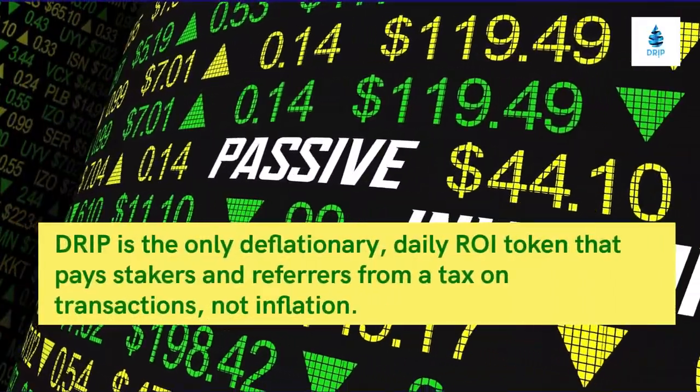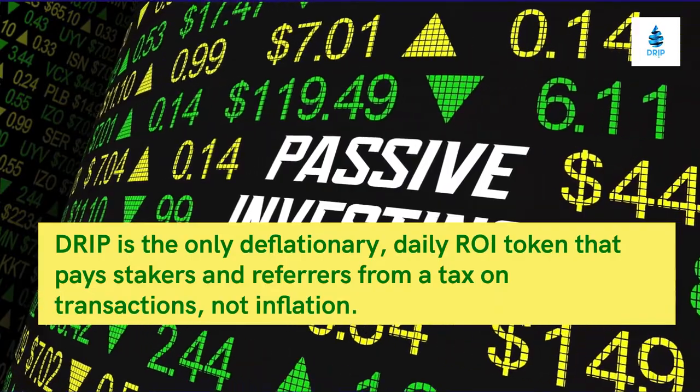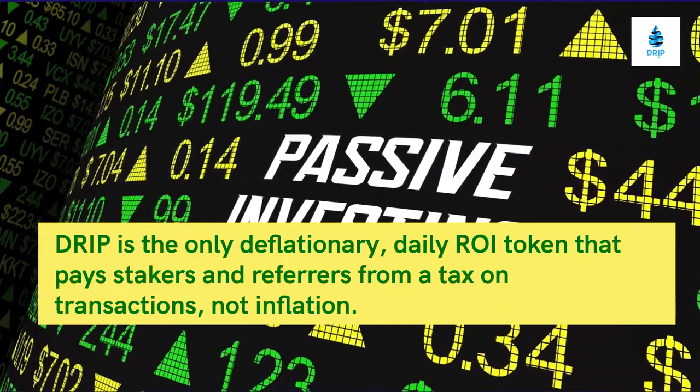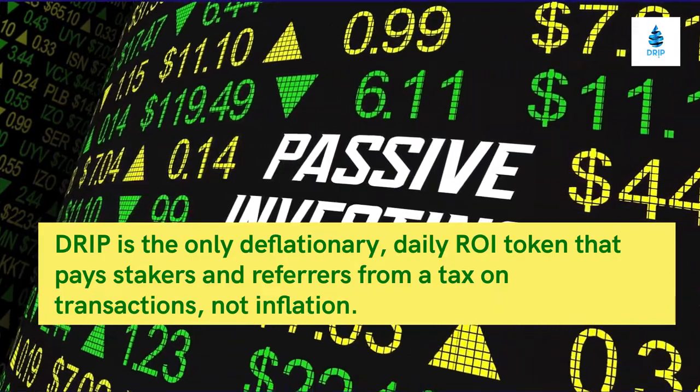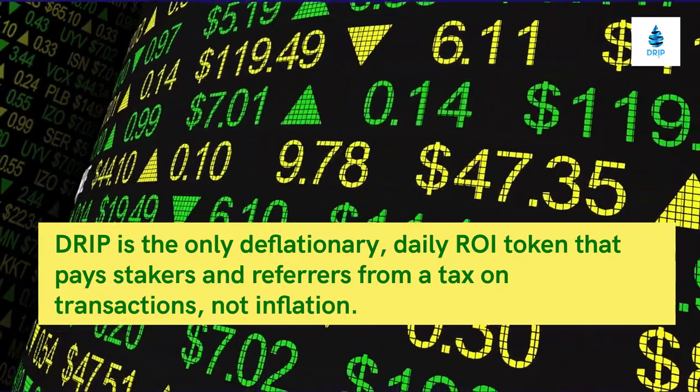DRIP is the only deflationary daily ROI token that pays stakers and referrers from a tax on transactions, not inflation.